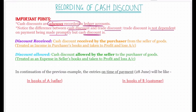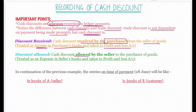You will need to know two concepts: discount received and discount allowed. Discount received is the cash discount received by the purchaser from the seller of the goods. Discount allowed is the cash discount allowed by the seller to the purchaser of the goods. This is treated as an expense in the seller's book and taken to the profit and loss account.